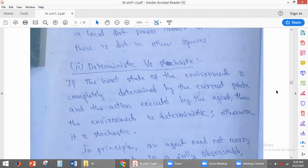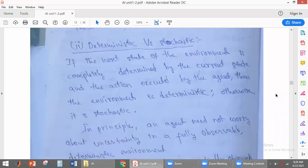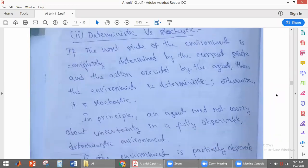The next state of environment is completely determined by the current state and the actions executed by the agent. Whenever the agent receives information, it will perform some actions or not. Based on the current state and whatever action the agent will perform based on those two pieces of information, the next state of environment is completely determined. Then the environment is called deterministic.